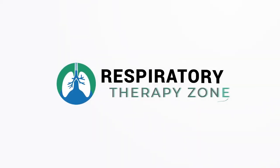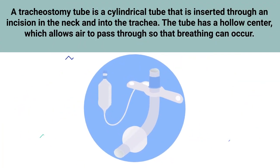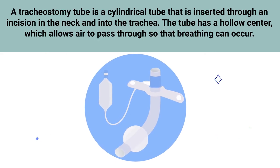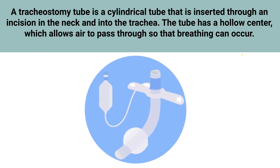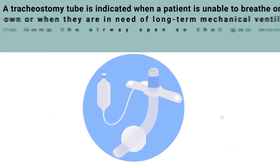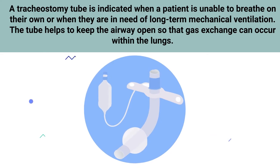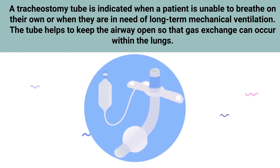A tracheostomy tube is a cylindrical tube that is inserted through an incision in the neck and into the trachea. The tube has a hollow center which allows air to pass through so that breathing can occur. A tracheostomy tube is indicated when a patient is unable to breathe on their own or when they are in need of long-term mechanical ventilation.